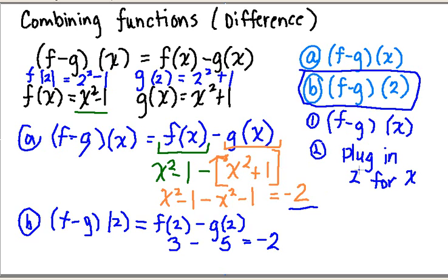And then part 2 tells me that I need to plug in a 2 for x. Well since my answer did not yield any x in the answer, then minus 2 would just be my answer. And you can see that I get the same answer, regardless of the way that I do the problem. So that is how we find the difference of two functions.